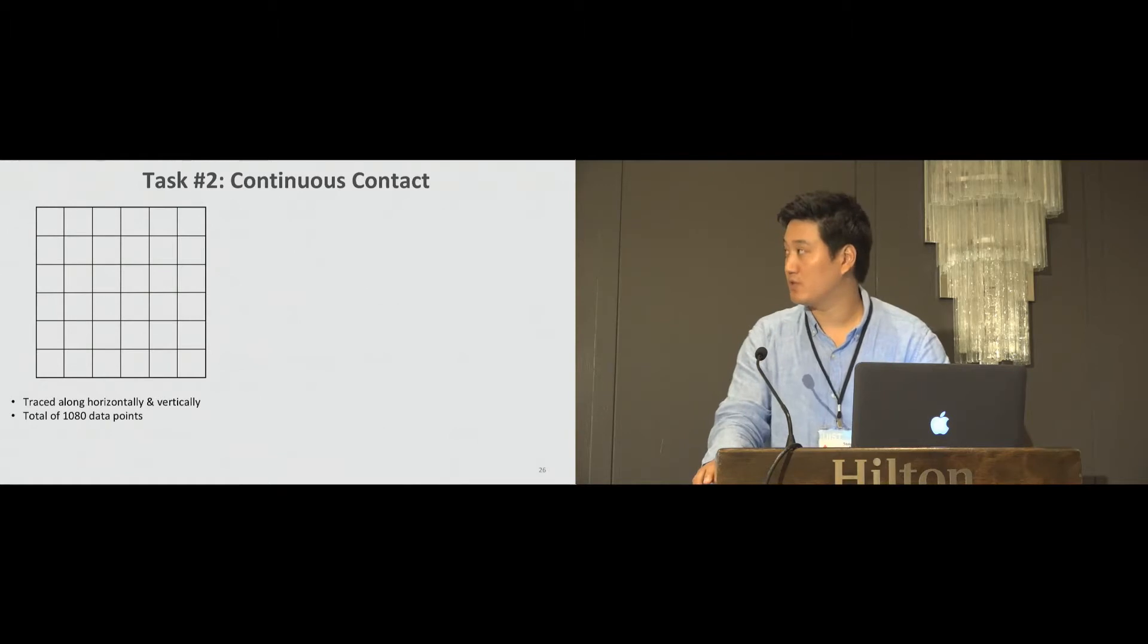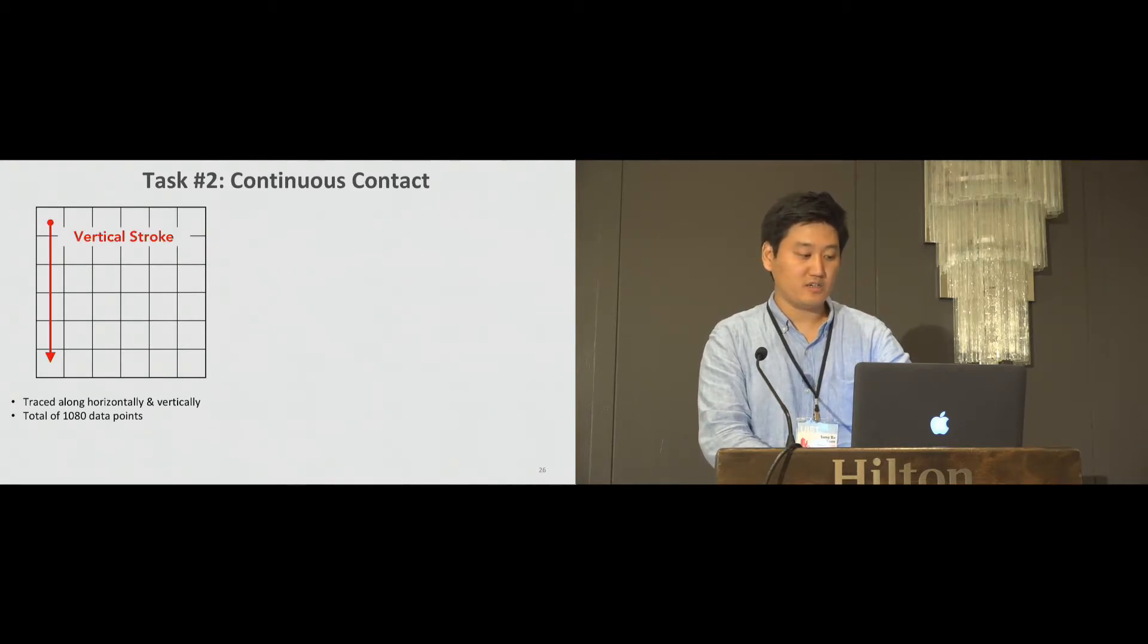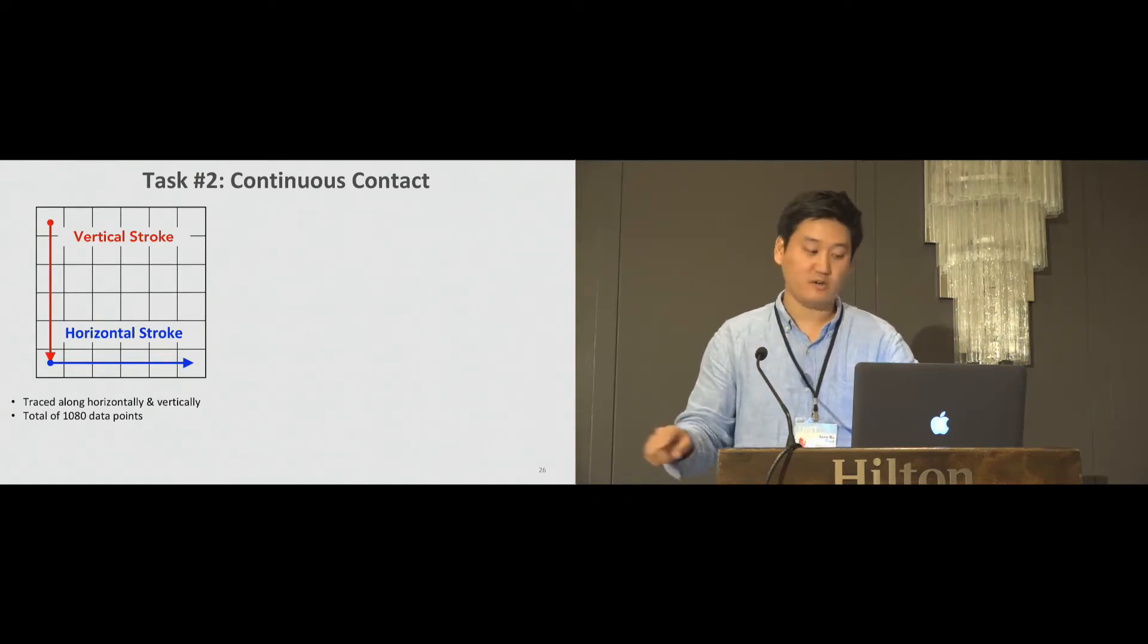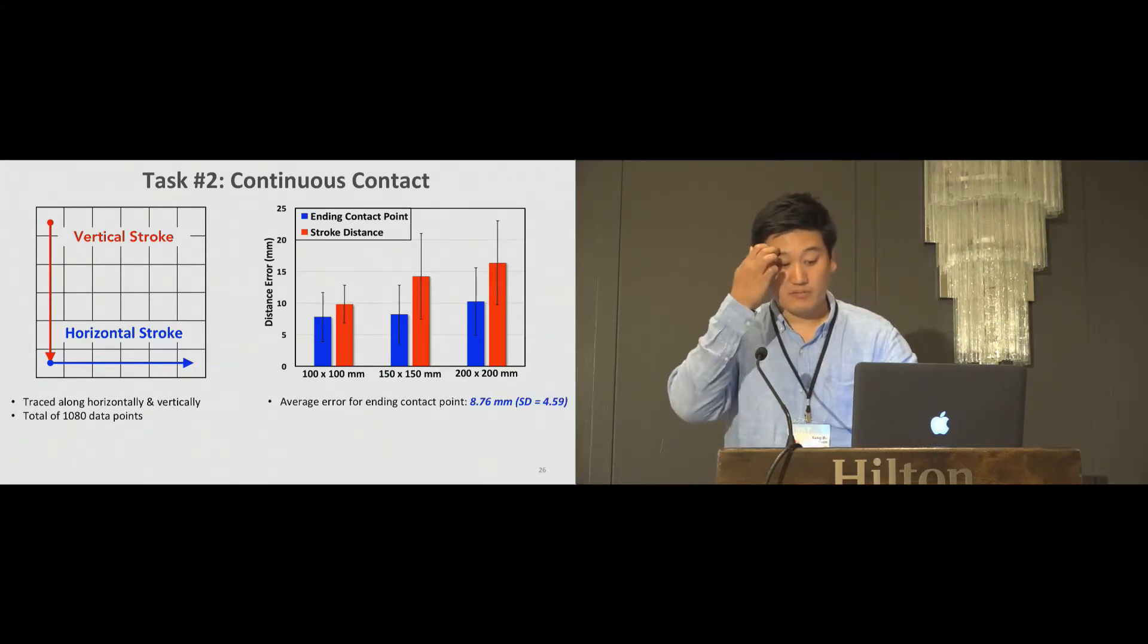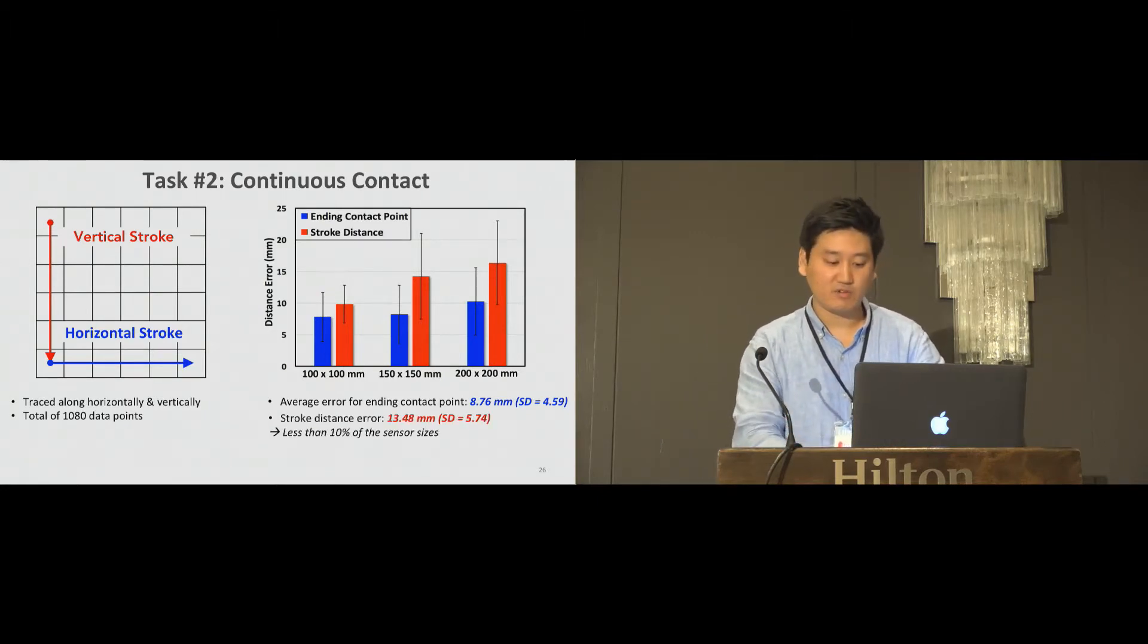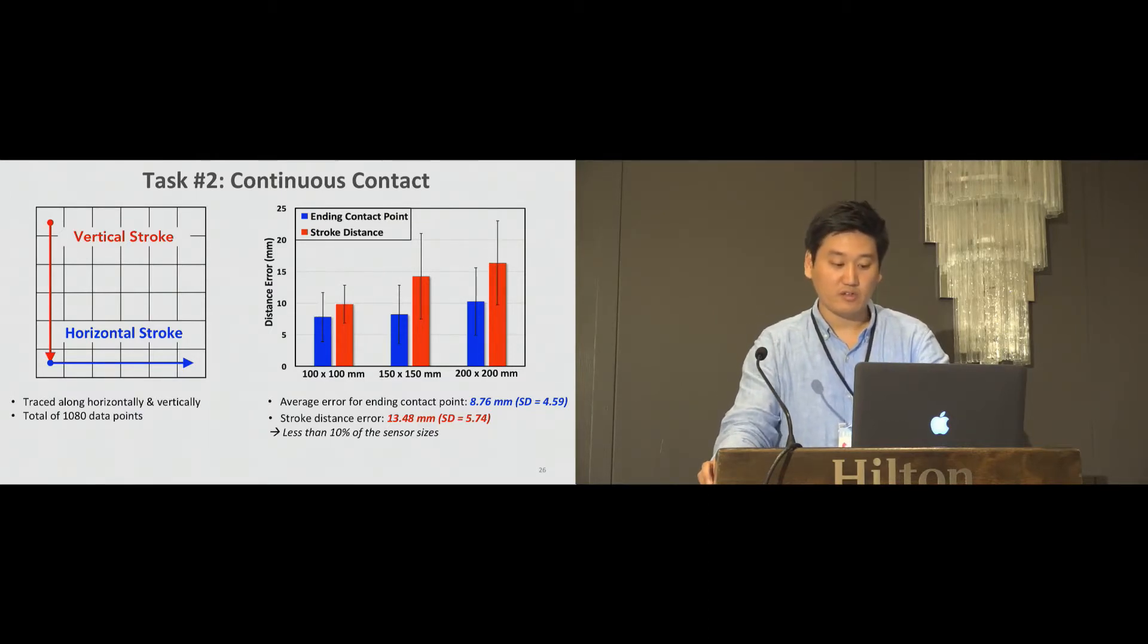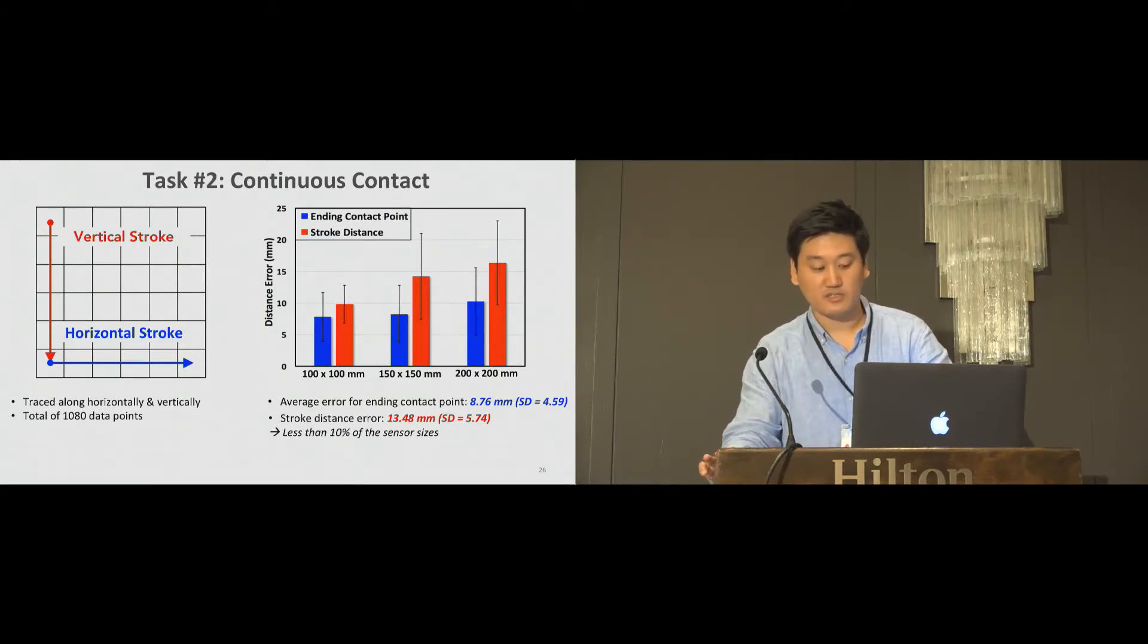We also explore the system accuracy for continuous contact localization. Here we use vertical and horizontal strokes where users do swiping vertically and horizontally on our sensor regions. The average distance error was about 8.7 millimeters for the ending contact points. Here the ending contact point means we only look at the distance error at the endpoints. If we look at the overall stroke length, we found it's a little bit higher because there's an error between the initial contact point and the ending contact point, and it came out to be 13 millimeters. One thing we noticed is that the stroke distance errors were less than 10 percent of the sensor size for different sensor sizes.